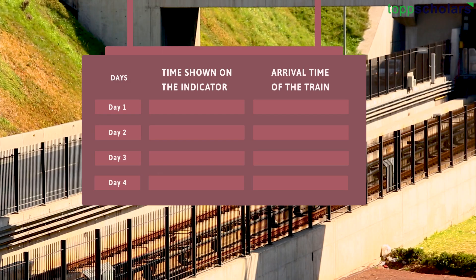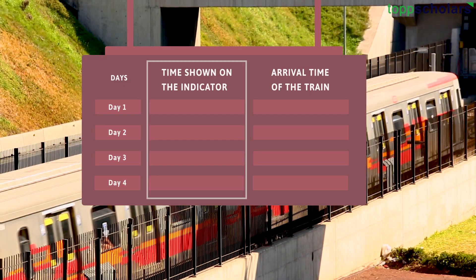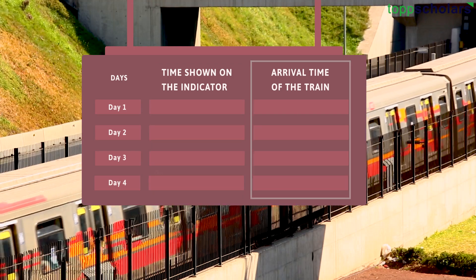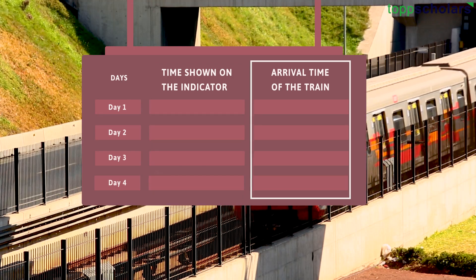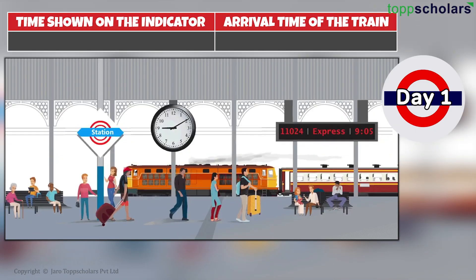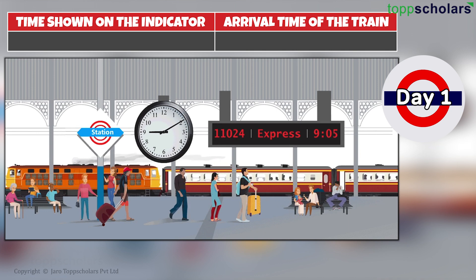We are noting down two different data: one is the time shown on the indicator, and the second is the arrival time of a train. On day one, the arrival time of the train is 9:10 a.m., whereas the time on the indicator is 9:05 a.m.